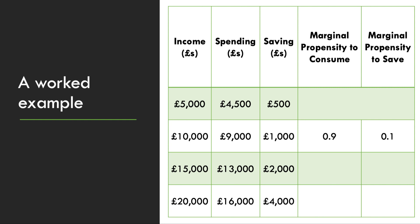Income has increased to £15,000 from £10,000. Notice what's happened to spending — it's gone up this time by £4,000. So this time we're spending 80%, or 0.8, of any extra income. Savings have risen by £1,000. £1,000 over £5,000 is a 20% marginal propensity to save, and again those two figures add up to one. So we're spending more, but in relative terms we're only spending 80% of a change in income, not 90%.